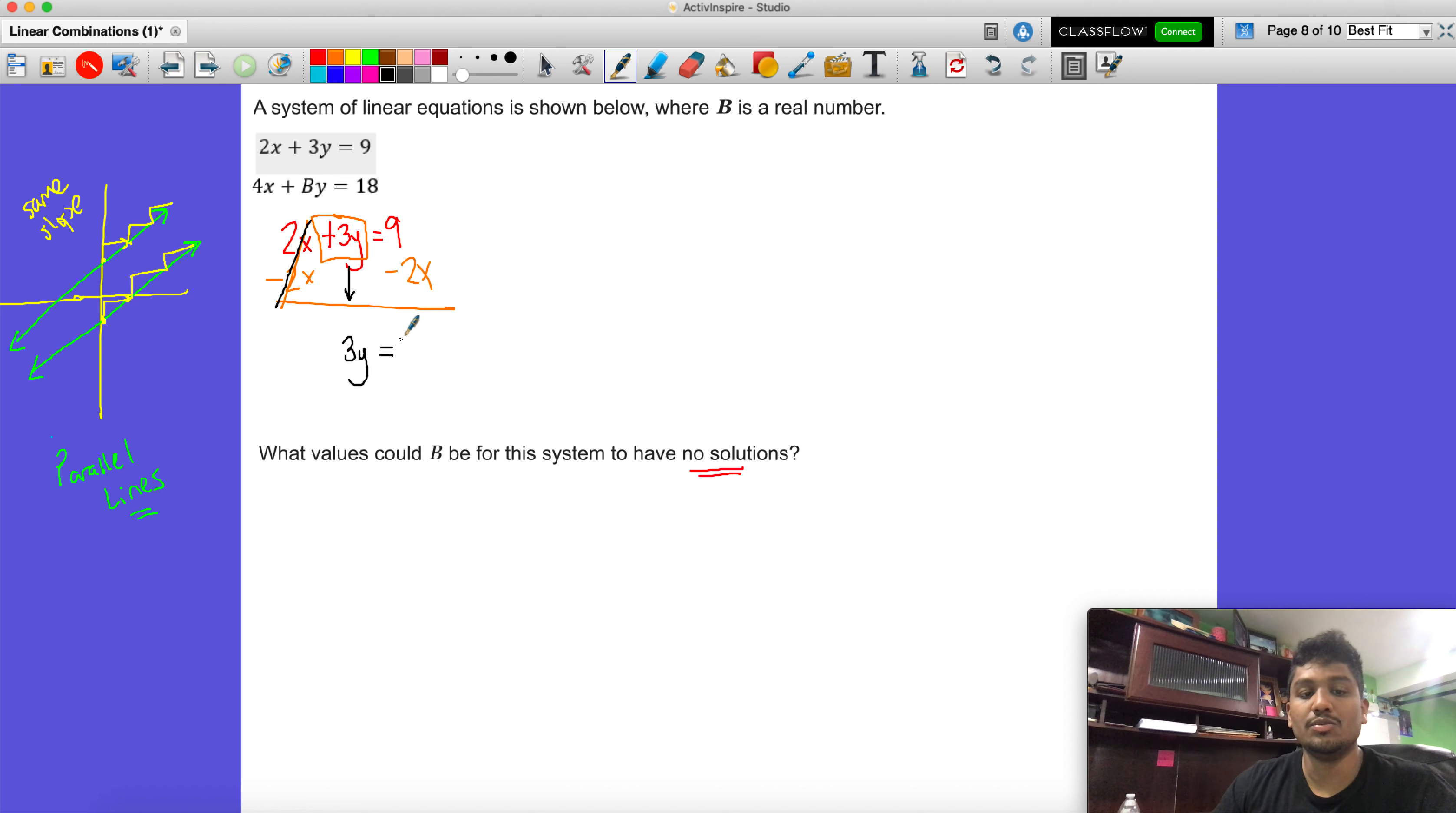This comes straight down, so it becomes 3y equals. Now here, remember, unless this had an x, like if it had an x there, then you could combine. But since it doesn't have an x, we're going to just do negative 2x plus 9. And finally, we're going to divide each term by 3, and that's going to get the y by itself.